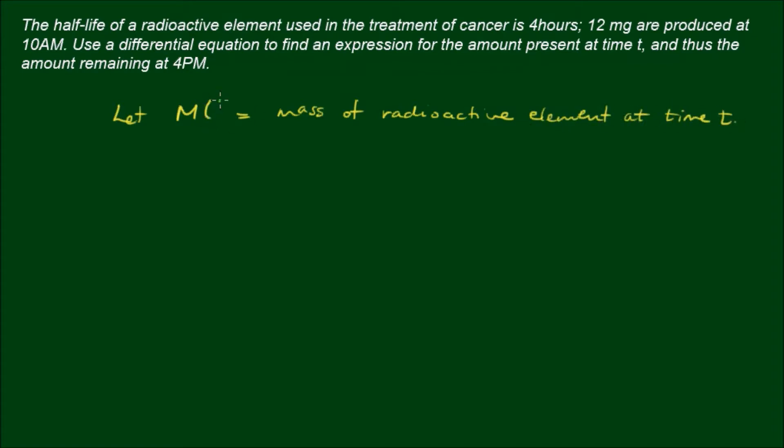So M will be a function of t. So the differential equation will simply be dM/dt equals negative kM. So this is the differential equation we'll solve to model this phenomenon of exponential decay. And if we work through it as always, we should get the general solution of M(t) equals Ae^(-kt).